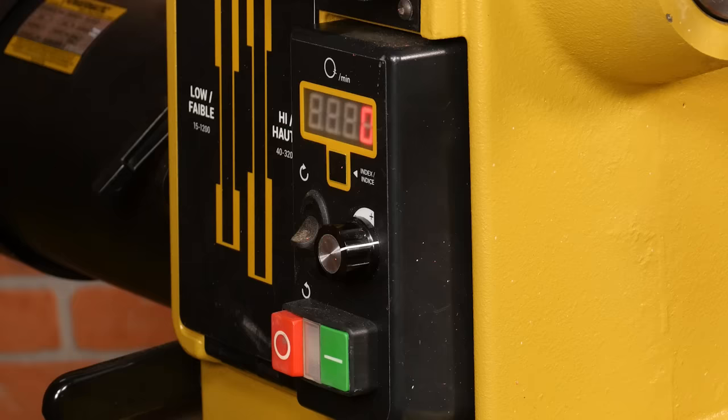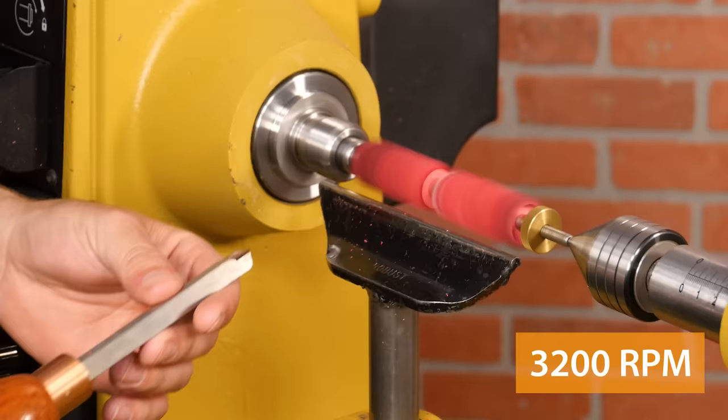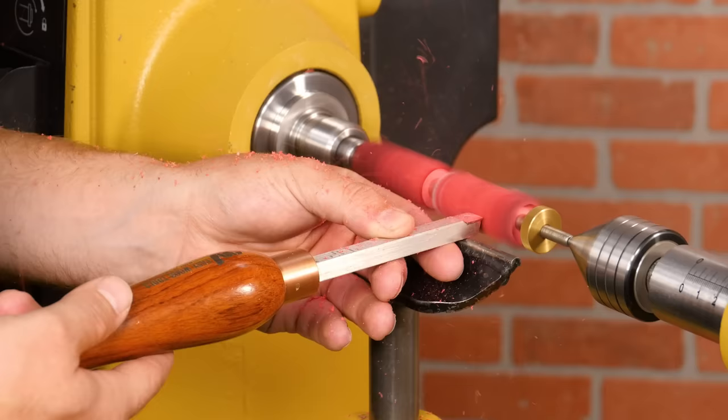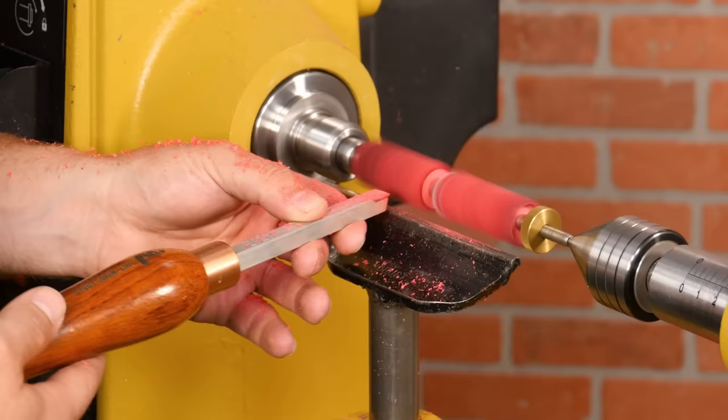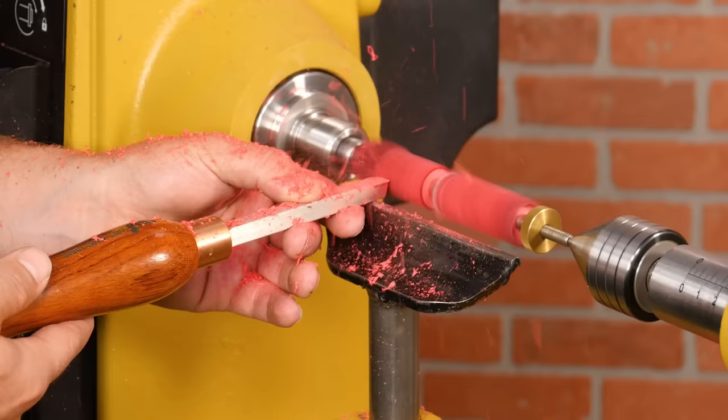Now turn the lathe on and set the lathe speed to around 3200 rpm and with a firm grip on the tool place it on the tool rest and advance it until it contacts the wood. Move the tool from side to side keeping it level and remove all the edges until the blanks are round.